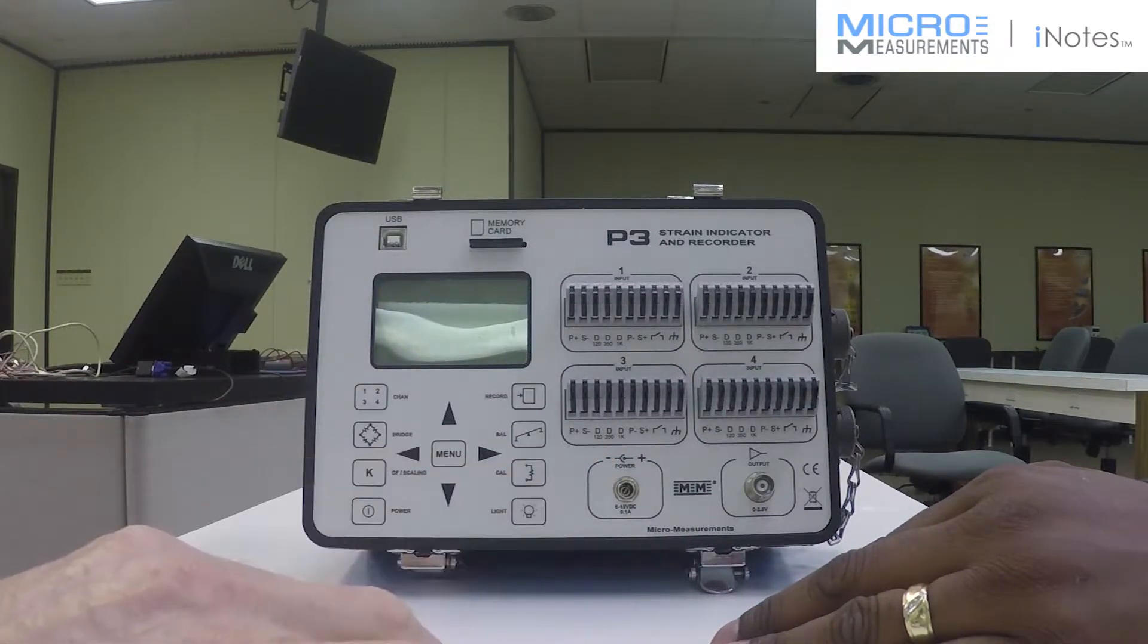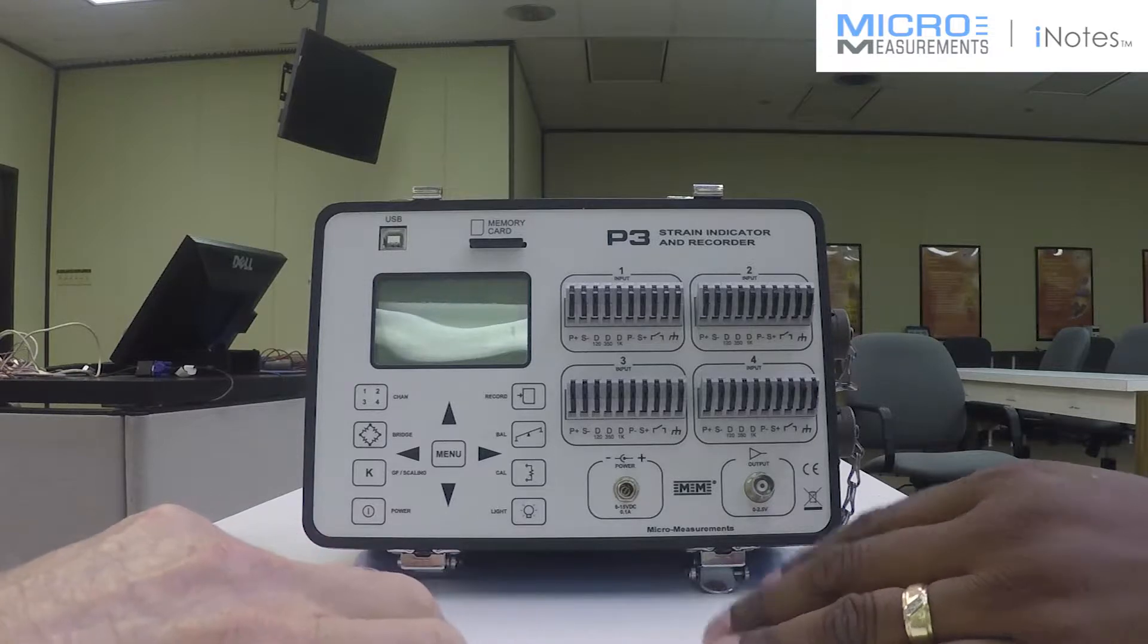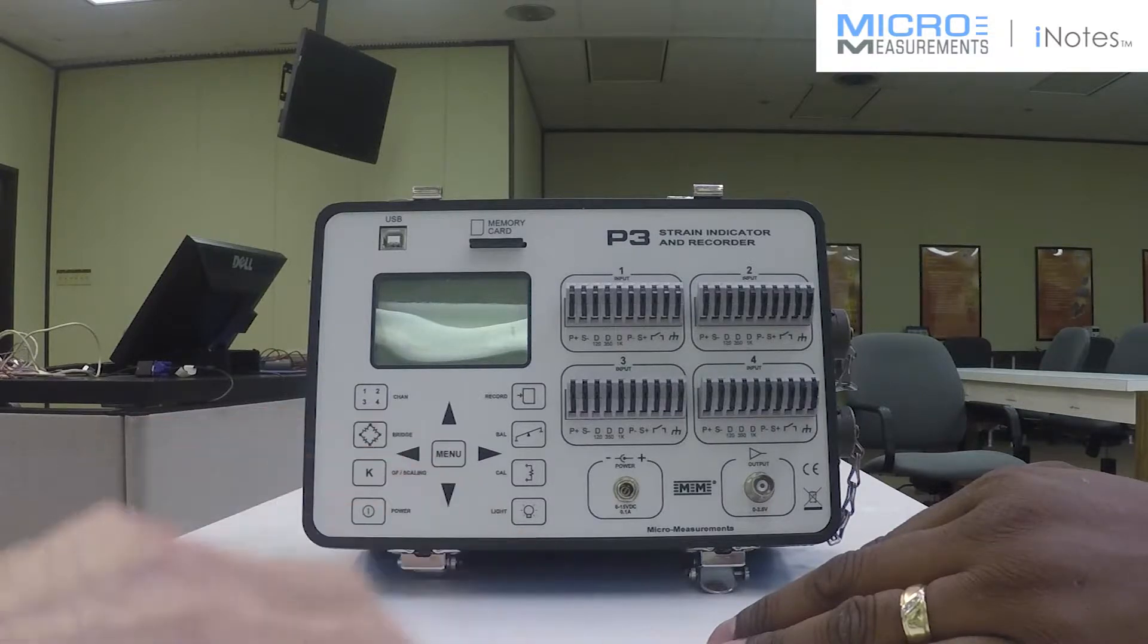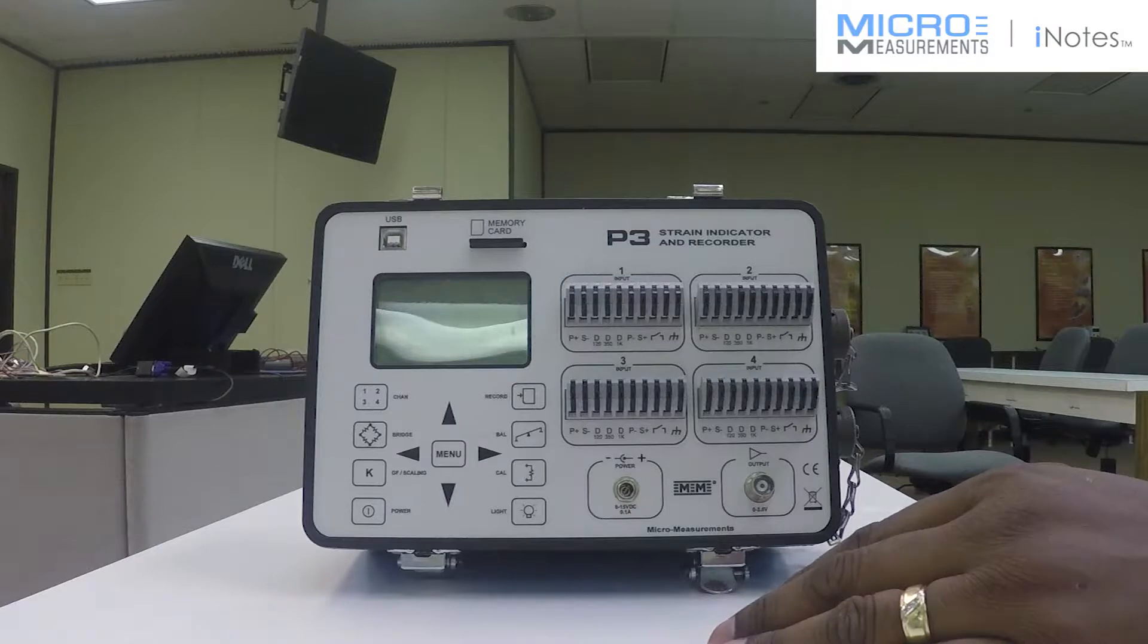Okay Danielle, tell me about this model P3 test instrument. Well Greg, the P3 is a lightweight portable strain indicator. How many channels of data can you take with this instrument? You can take anywhere from one up to four channels of strain gauge related data.